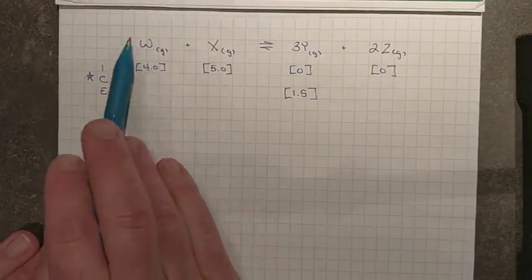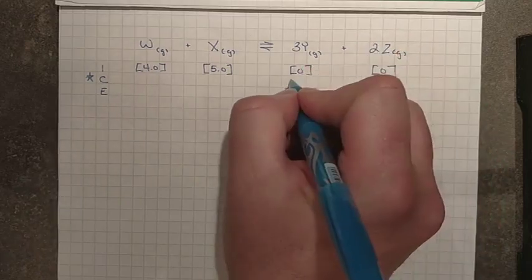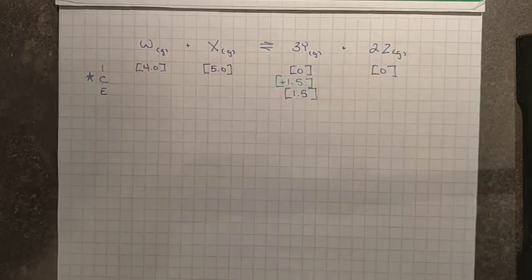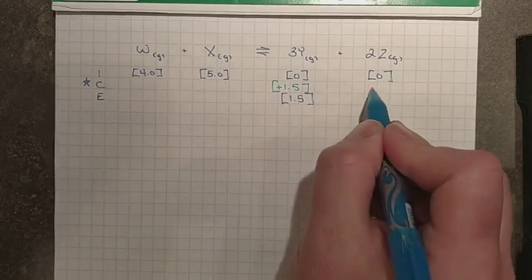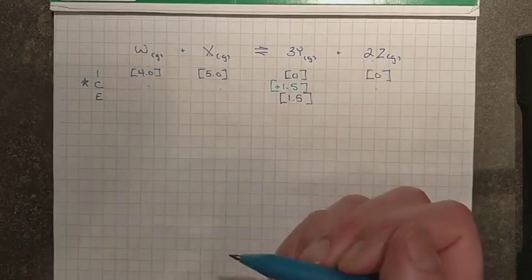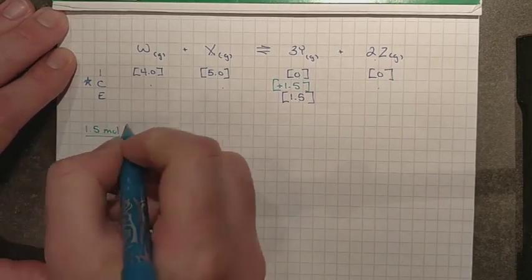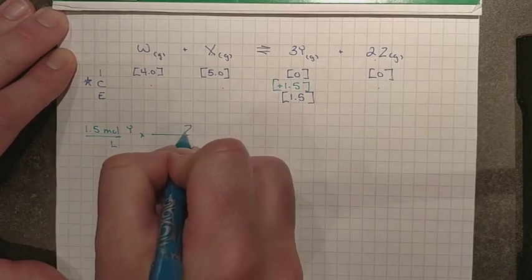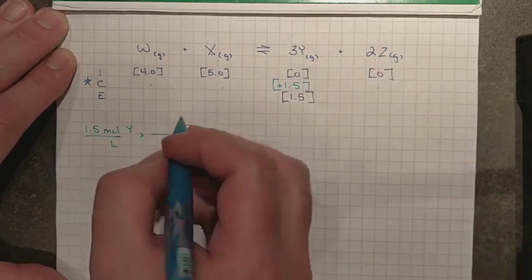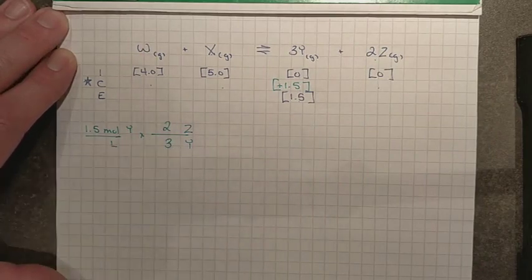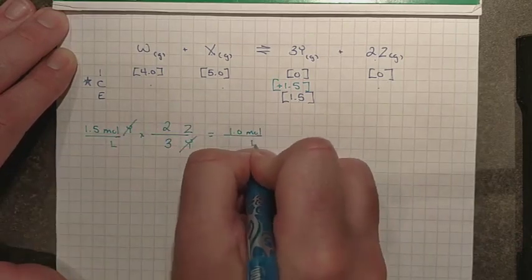So, in this one, we do need to finish coming up with our ICE table. We can see that there is a certain change that we've got. We go from 0 to 1.5 moles per liter for substance Y. Everything here is gaseous, so we're going to use them all in our eventual expression. So, now we just have to do some stoic to figure out what's going on. You can see that we have different mole ratios throughout, so this will take actually doing the stoic. If I have a change of 1.5 moles per liter for substance Y, and I want to figure out what's happening for substance Z, I will have to take a look at the mole ratio between these two guys.